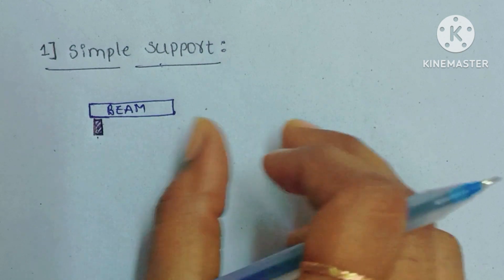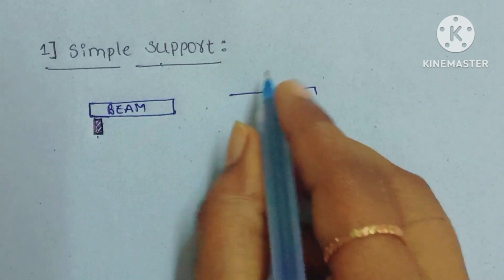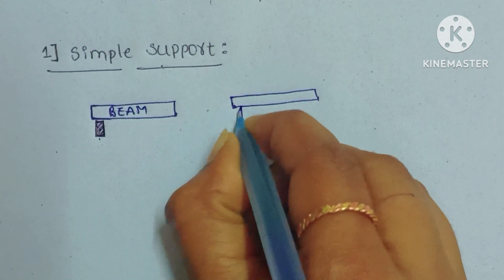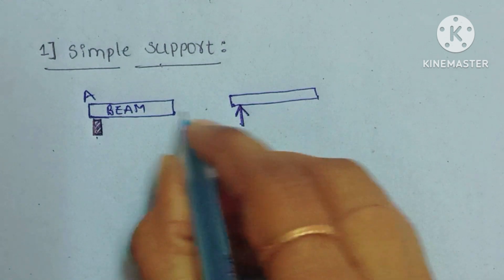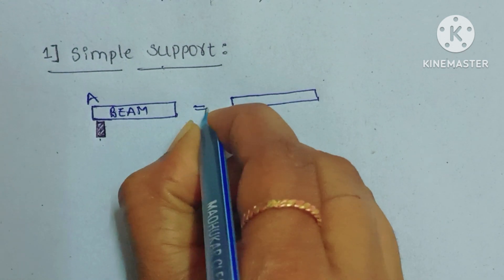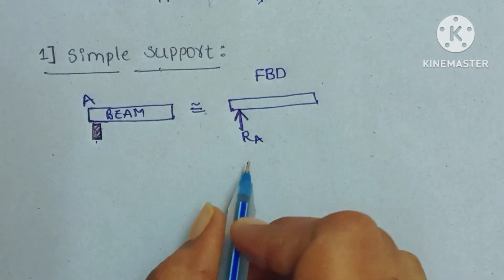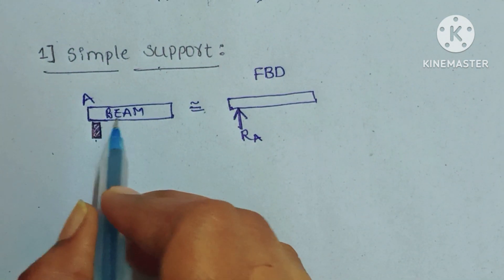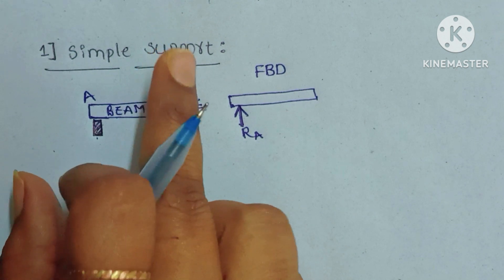A free body diagram has the same meaning as the real diagram. A simple supported beam has only one reaction force, which is a vertical reaction force. If you take this point as A, then the reaction force at A — that is RA — will exist. FBD means free body diagram. In a simple support beam, only one reaction force RA will exist.